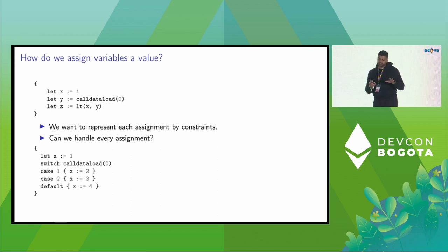The big question is can we handle every assignment? Here's a different Yule block where you assign the value 1 to X, and there's a switch statement which has three different control flow branches. Depending on the value of call data load 0, which we don't know what it is, we can assign X to 3 or 4. So the question is can we actually encode the switch?